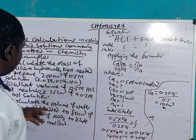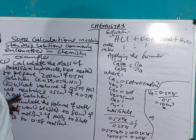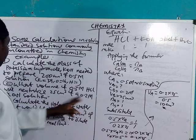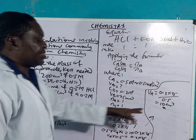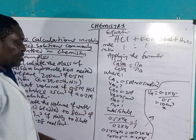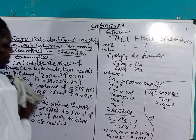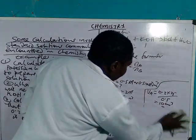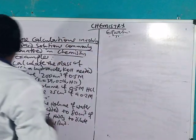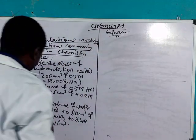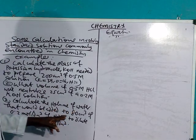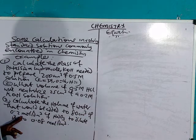0.2 times 25 gives you 5, divided by 0.5 gives you 10. So the final answer is 10 cm³. That is the evaluation of the expression. Remember, most of your examination bodies don't bring this form; they bring the other one. Remember, if you have any comments, go to the comment section and I will reply immediately.